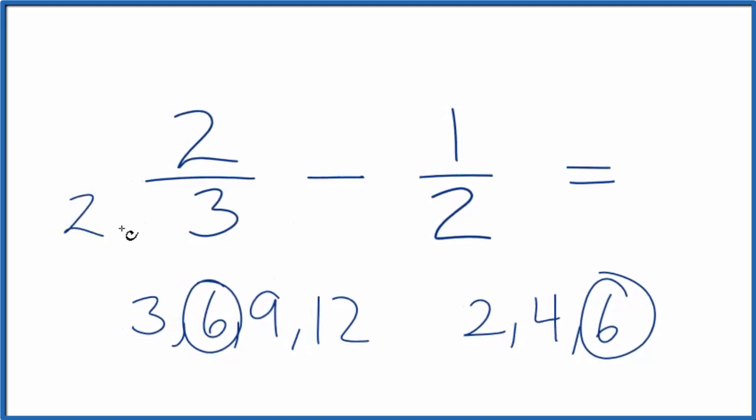Let's multiply 2 times 3. That would give us 6, but we have to multiply the top as well. 2 over 2, you divide 2 by 2, you get 1. So we're not changing the value, just the way it's written.